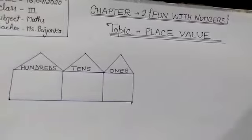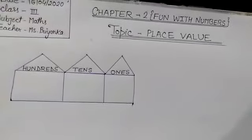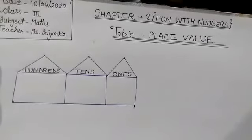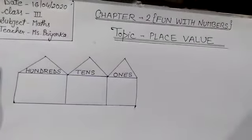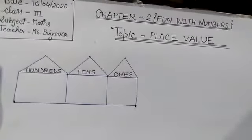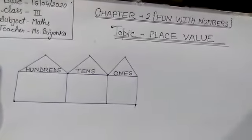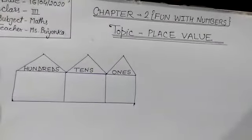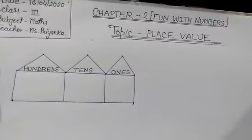But students, remember one thing. Our game is that we will put one digit in one house. Remember, this is the rule of the house. What is the rule? Only one digit can stay in one house. More than one digit cannot stay in one house. Is that clear?